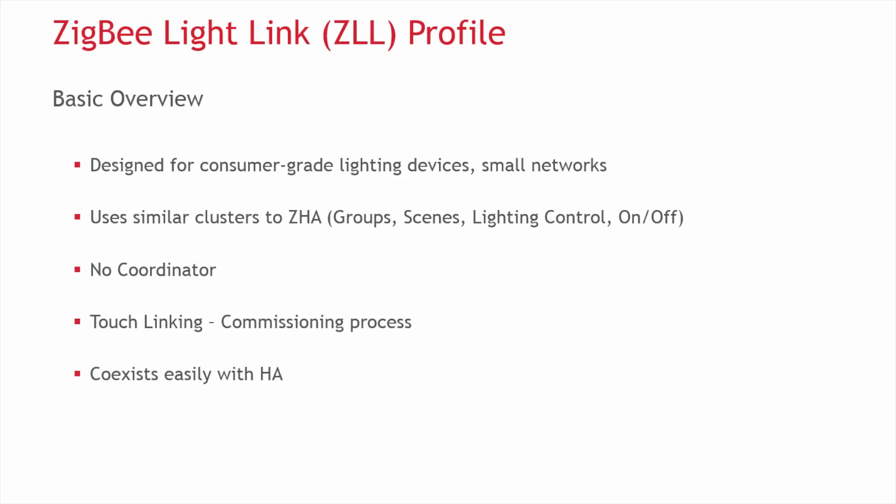Next, we have Zigbee Light Link, commonly referred to as ZLL. ZLL was designed for consumer-grade lighting devices in a small network. It uses similar clusters to Home Automation, such as those for groups, scenes, lighting control, and on-off functional groups. In ZLL, there is no coordinator; instead it uses a touch linking method for commissioning, where initiators scan for target devices to touch link into a network. ZLL can coexist with HA profile devices once they are part of the same network, as ZLL acts very similar to HA once in the network — the big difference being the commissioning method.